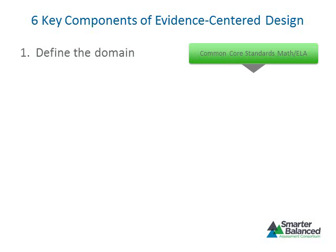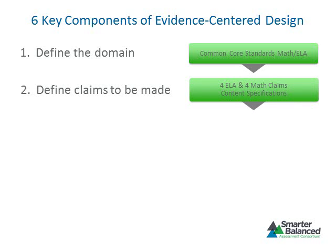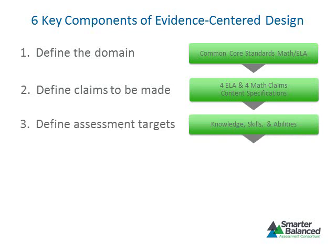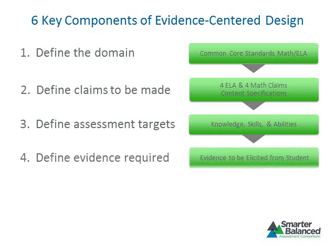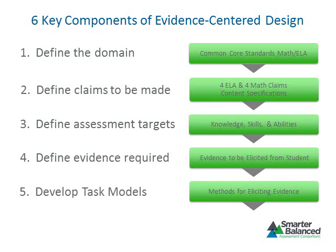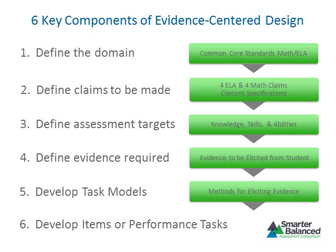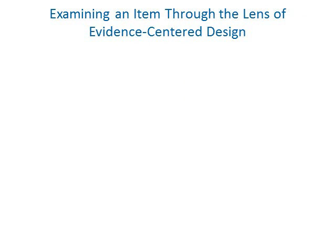To review, there are six steps in the evidence-centered design process. Step one is defining the domain — identifying what is to be measured. For Smarter Balanced, the domains include the Common Core State Standards for mathematics and English language arts. Step two is establishing the claims to be made about the achievement of standards. Step three is identifying the assessment targets — the knowledge, skills, and abilities that make up the mathematics and English language arts domains. Step four is determining the information that will provide evidence that a student has achieved the assessment targets. Step five is creating a task model that describes the characteristics of items and tasks that elicit evidence about the achievement of an assessment target — in essence, a set of instructions on how to build items and tasks. Finally, step six is using the instructions specified in the task model to write items and tasks.